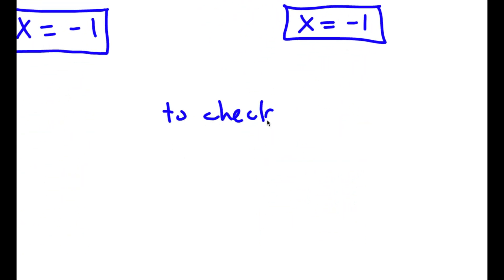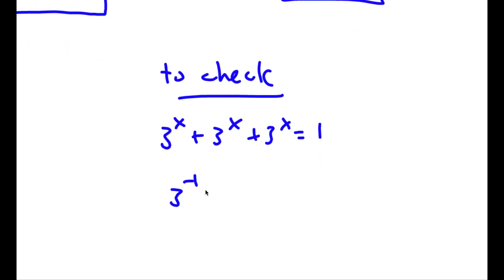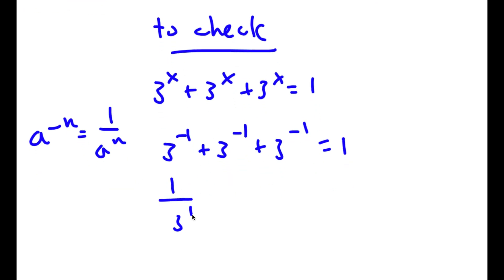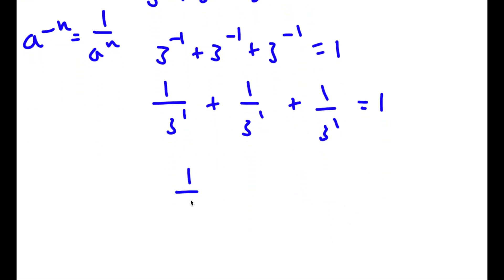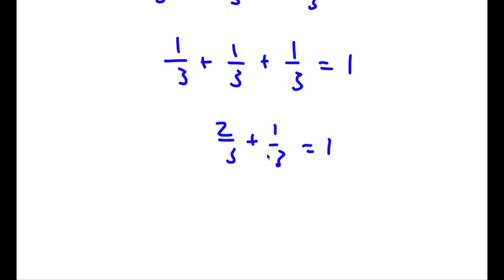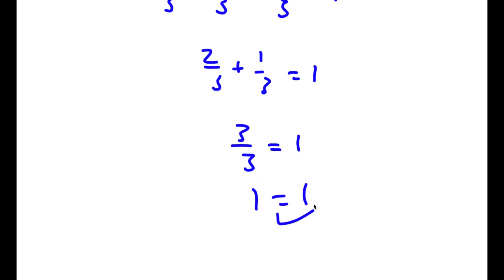Now to check: I have 3^x plus 3^x plus 3^x equals 1, and x equals negative 1, so I substitute: 3^(-1) plus 3^(-1) plus 3^(-1) equals 1. Using a^(-n) equals 1/a^n, each term becomes 1/3. So I have 1/3 plus 1/3 plus 1/3. That's 2/3 plus 1/3 equals 3/3, and anything divided by itself is 1, so 3/3 equals 1. This gives 1 equals 1, which is correct.